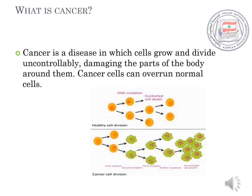To begin with, what is cancer? Cancer is a disease in which cells grow and divide uncontrollably, damaging the parts of the body around them. Cancer cells can overrun normal cells. In this picture, you can see we have a healthy cell division and a cancer cell division. In the cancer cell division, the cell does not have a specific pace or phase of division — it is dividing uncontrollably.